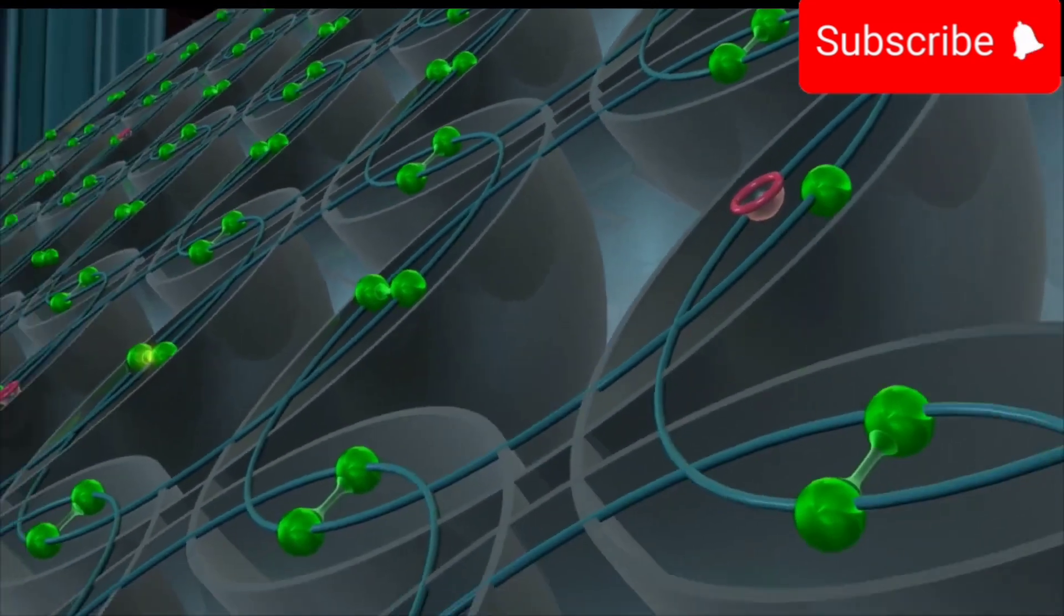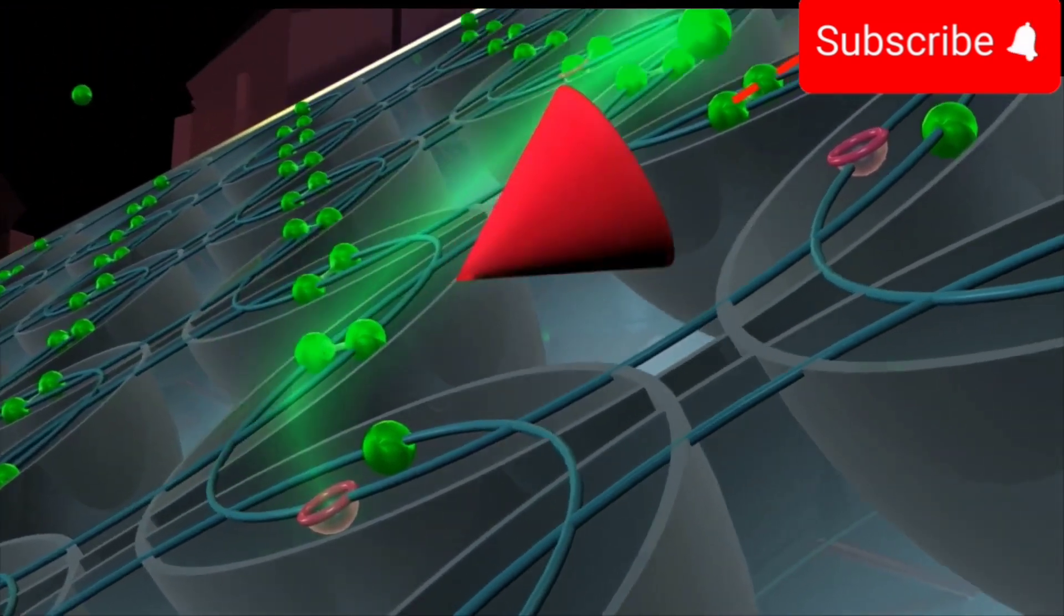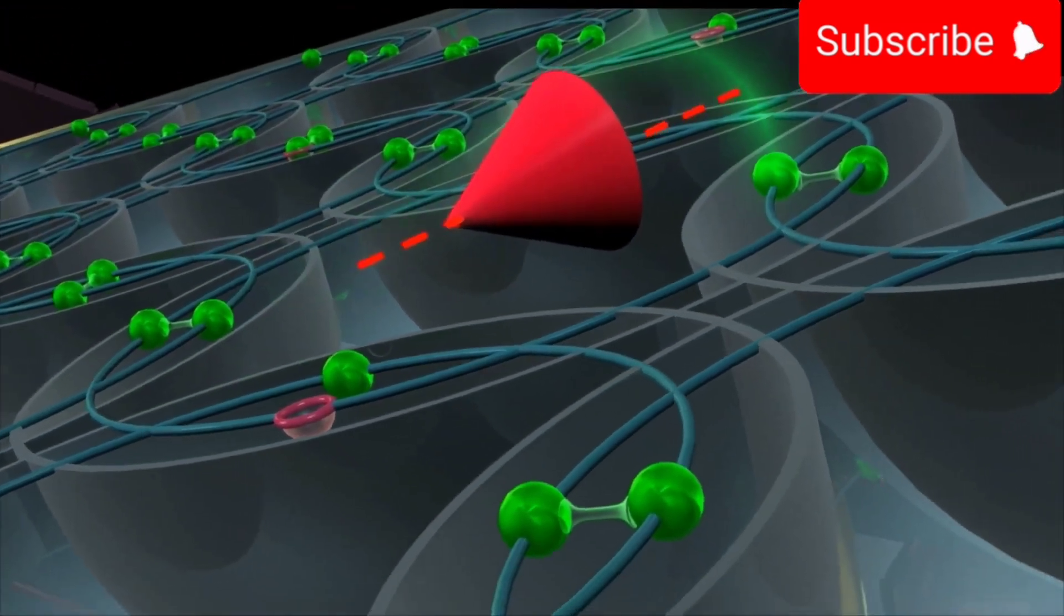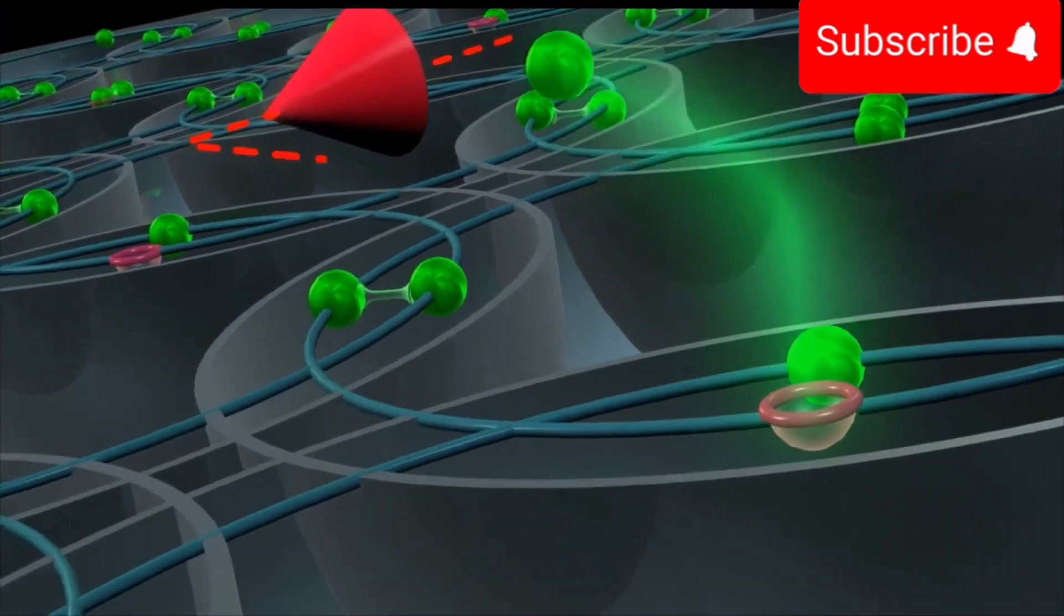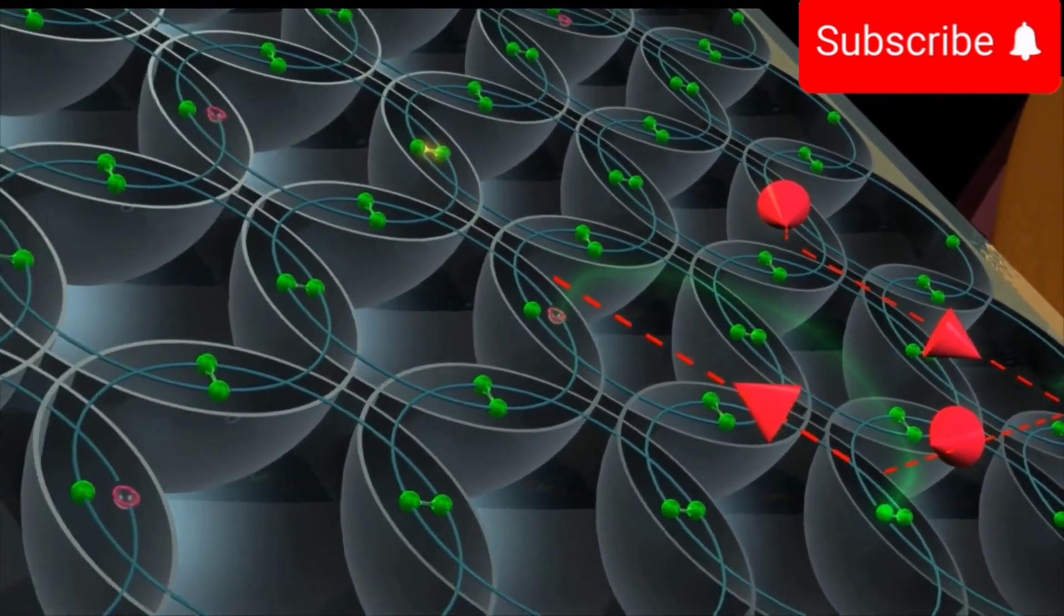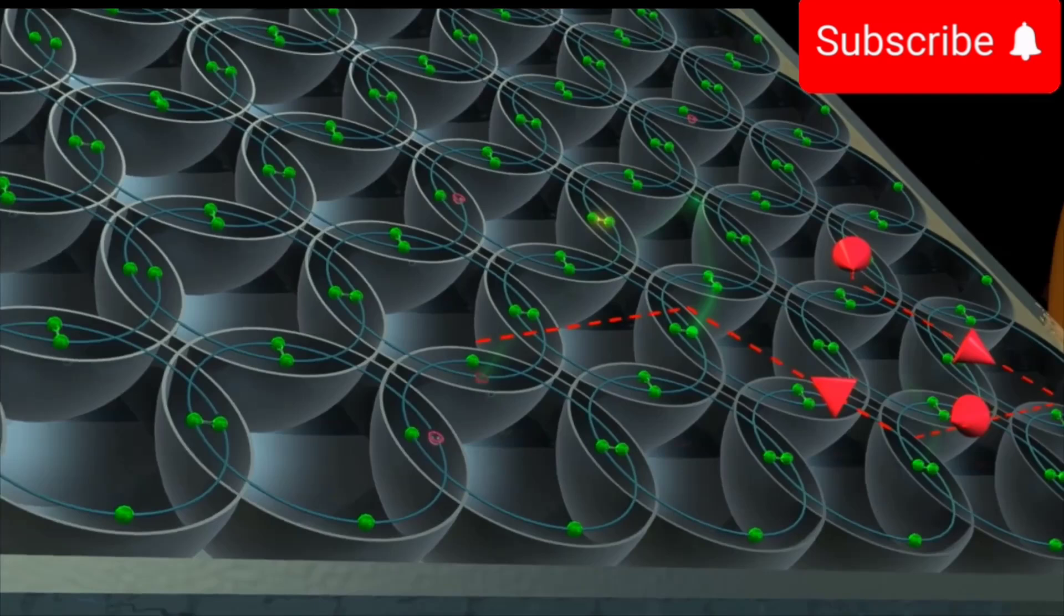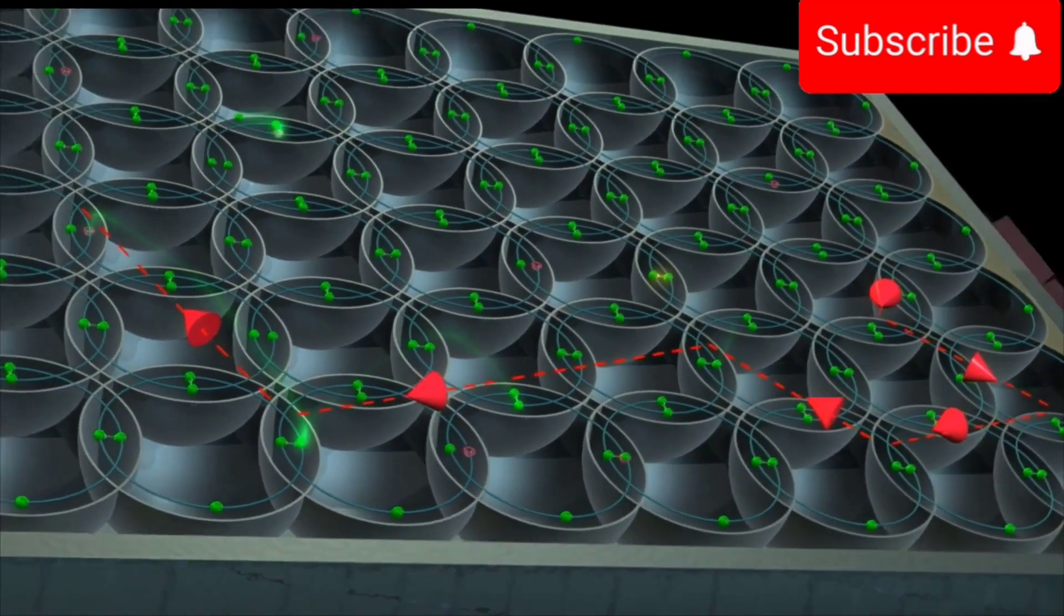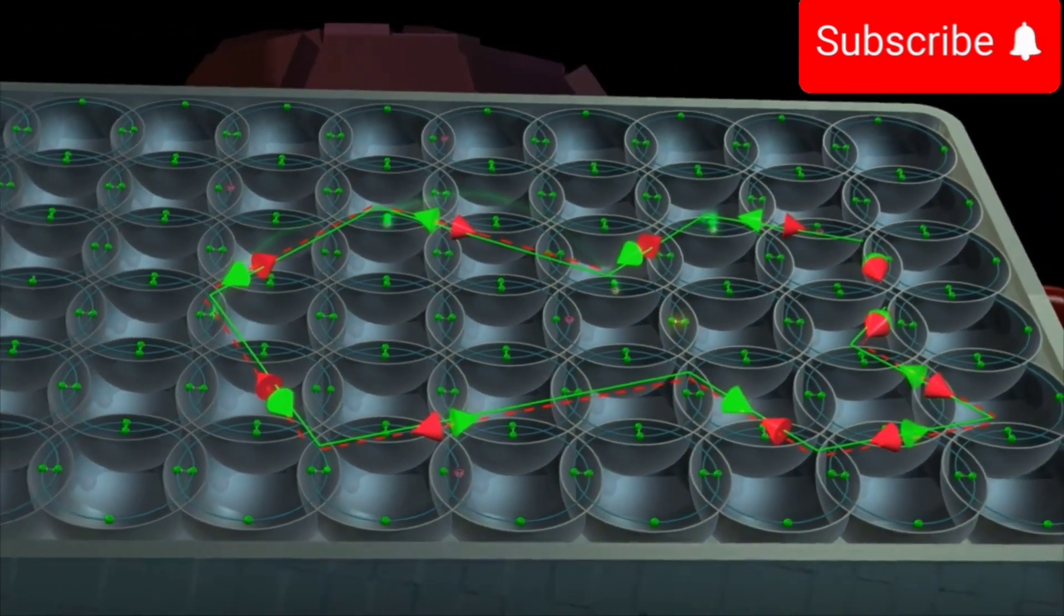Similarly, an electron from another covalent bond settles into this hole, creating a hole at its origin. This process continues, and we can say that the hole, acting as a charge carrier, is moving freely from one atom to the other in a direction opposite to that of the electron.